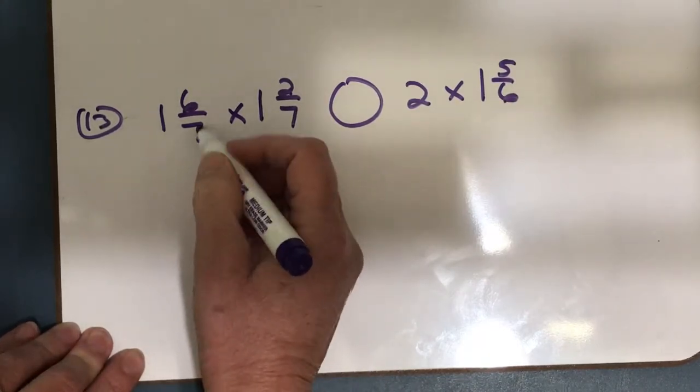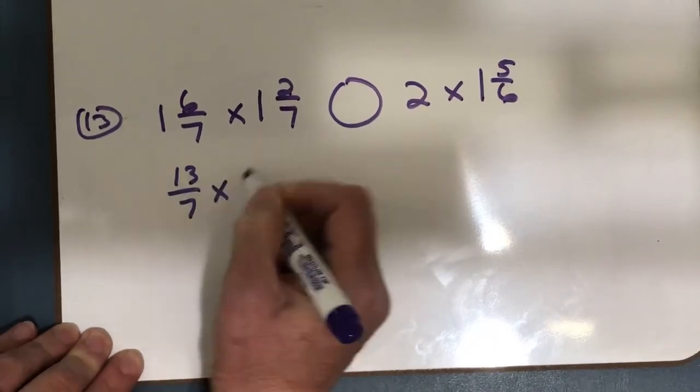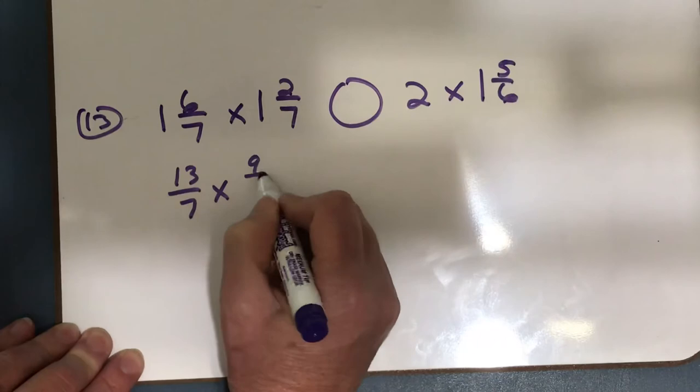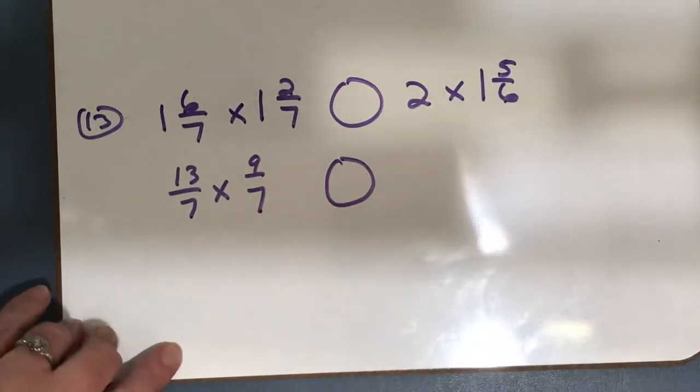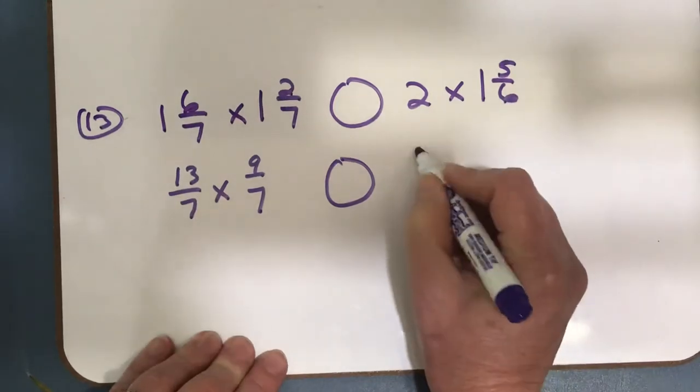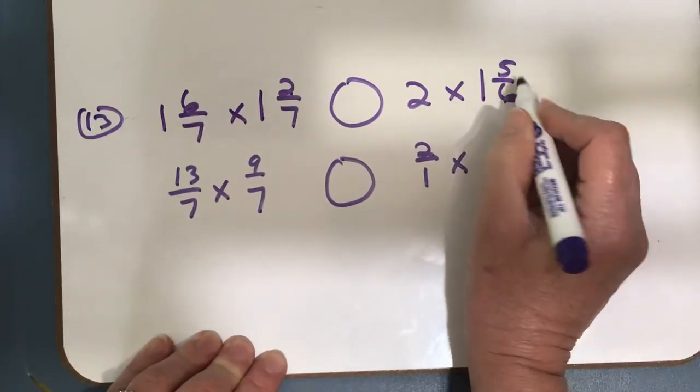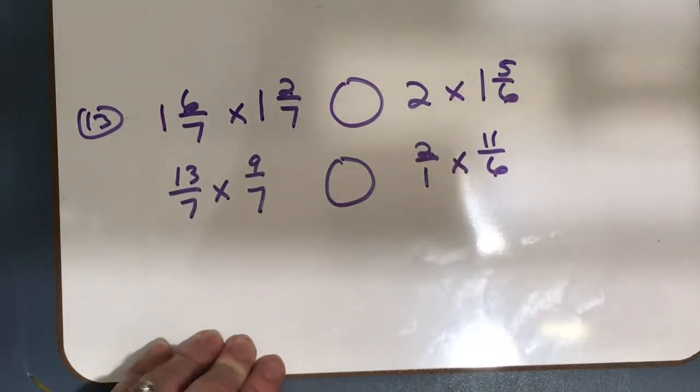So 1 times 7 is 7 plus 6 is 13, so 13 sevenths times 1 times 7 is 7 plus 2 is 9, so 9 sevenths. And I'm going to put my circle for my greater than or less than sign. Now I need to change both of these to fractions. 1 times 6 is 6 plus 5 is 11, so 11 sixths.